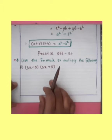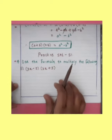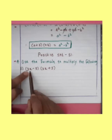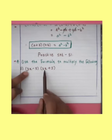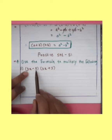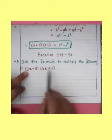You know, student, look at this — here A is equal to 3X, and B is equal to 5.